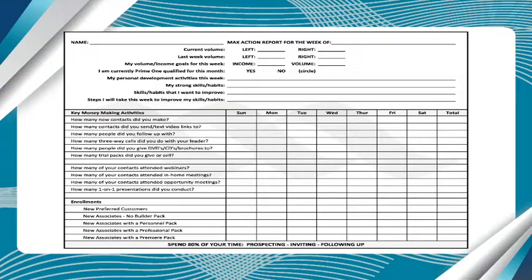Looking at this — there's a volume section here. What are your goals? The first goal would be to get to Bronze, which is 2,000 on each side. Write that down — write '2,000' to crystallize it. Did you qualify for Prime Bonus Level 1? That's your first goal. Remember, for everyone on your team, their first goal is to get to Prime Bonus Level 1. Then go through your strong skills and things you want to improve — reevaluate yourself, assess what's going well and what needs more coaching.